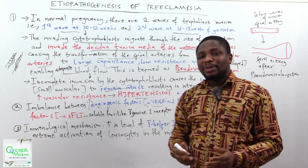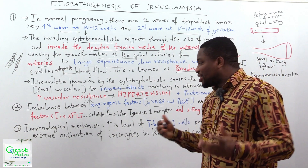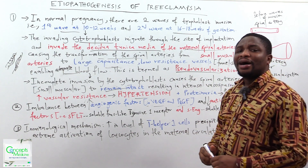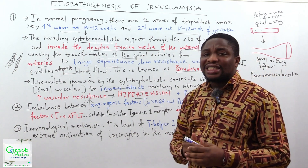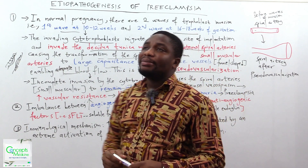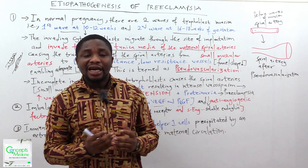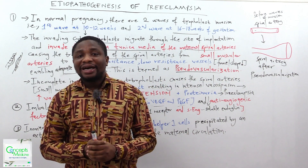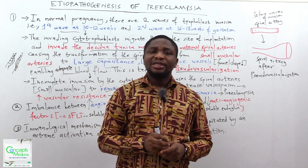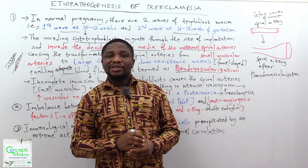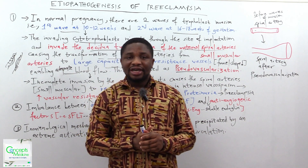Finally, the last mechanism is the immunological mechanism, where there is an up-regulation of T-helper 1 cells precipitated by an extreme activation of leukocytes in the maternal circulation. This can also give rise to preeclampsia. That makes up the etiopathogenesis of preeclampsia.